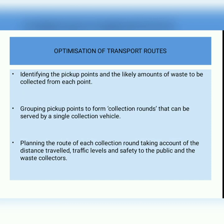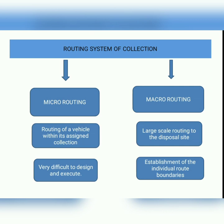In any system, well-planned collection and transfer can lead to significant reductions in the overall cost of waste management. This can be done by identifying pickup points, grouping these pickup points into a single collection round, and planning the route of each collection round. Routing can be done by micro routing or macro routing. In micro routing, the vehicle is routed within an assigned collection zone, while in macro routing large-scale routing to the disposal site is planned. Compared to macro routing, micro routing is more difficult to design and execute.